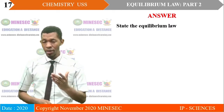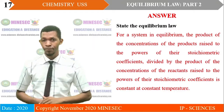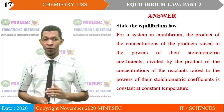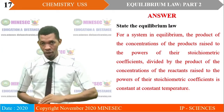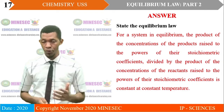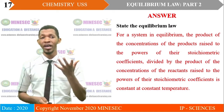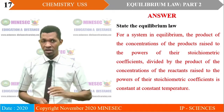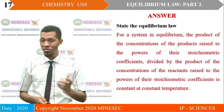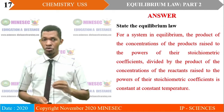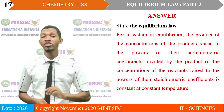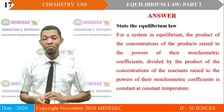The equilibrium law states that for a system in equilibrium, the product of the concentrations of products raised to the powers of their stoichiometric coefficients, divided by the product of the concentrations of the reactants raised to the powers of their stoichiometric coefficients, is a constant at constant temperature.